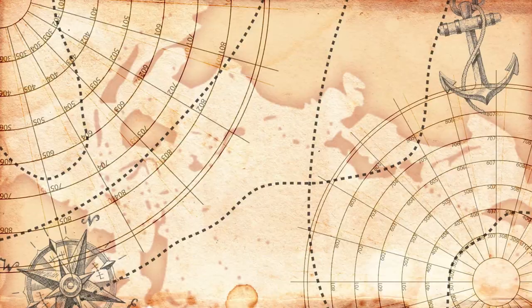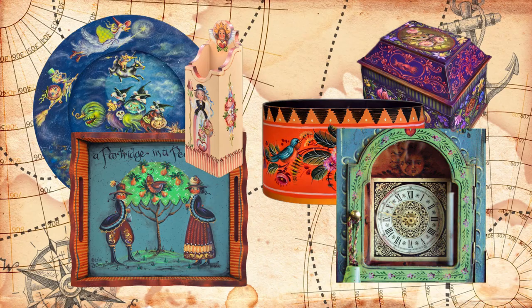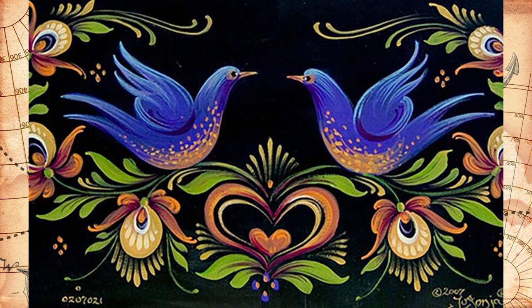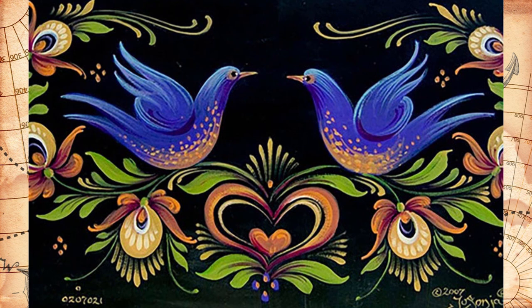Wooden boxes, tableware and jugs, even clocks. So basically anything. Which meant that they needed a paint that could be painted on any surface, but also have a strong permanent finish. And that's where Joe Sonja's matte flow acrylics come in.